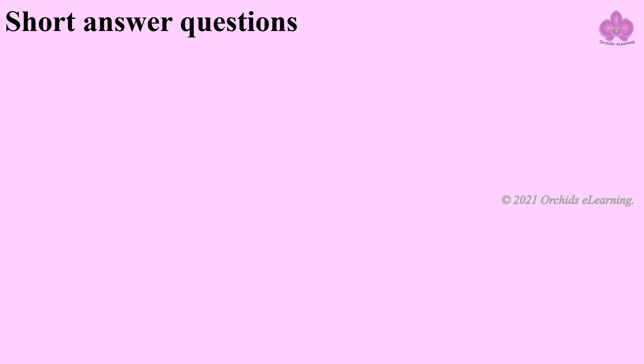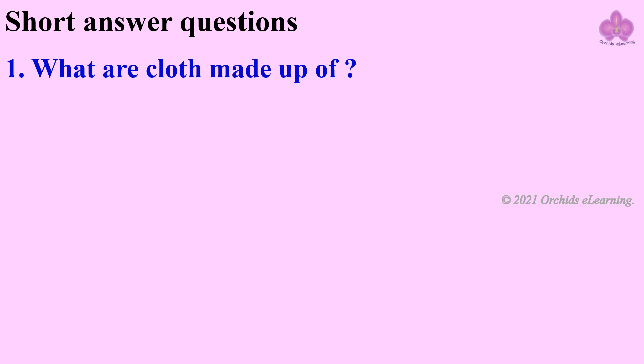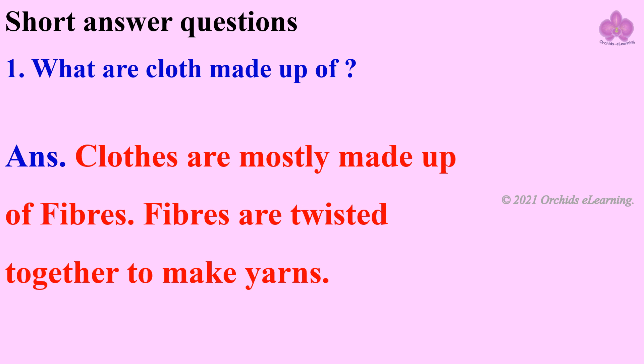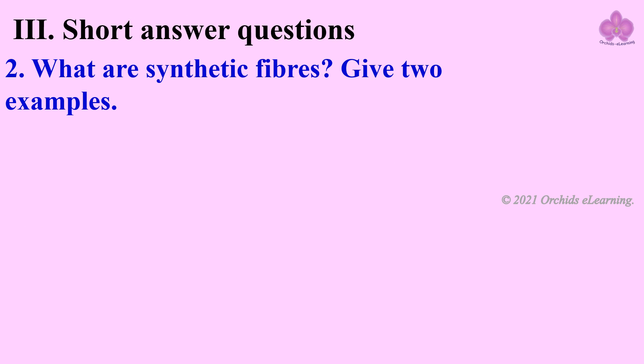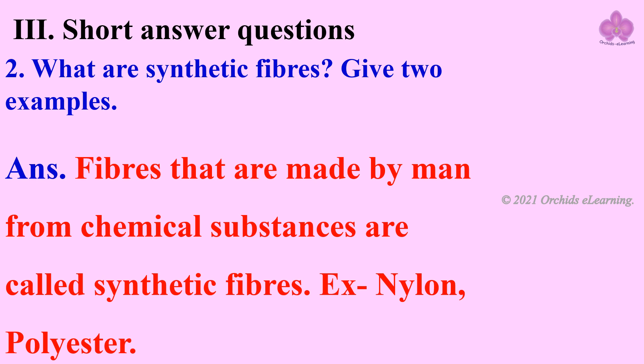Short answer questions. What are clothes made up of? Clothes are mostly made up of fibers. Fibers are twisted together to make yarns. What are synthetic fibers? Give two examples. Fibers that are made by man from chemical substances are called synthetic fibers. Examples: nylon, polyester.